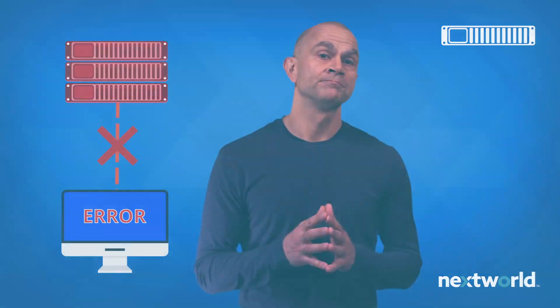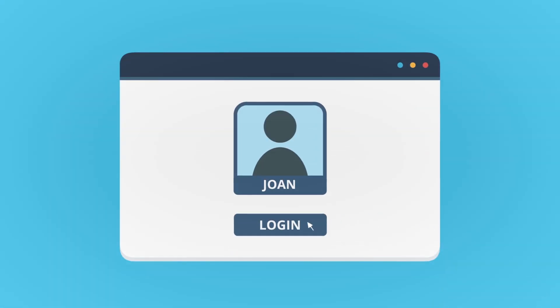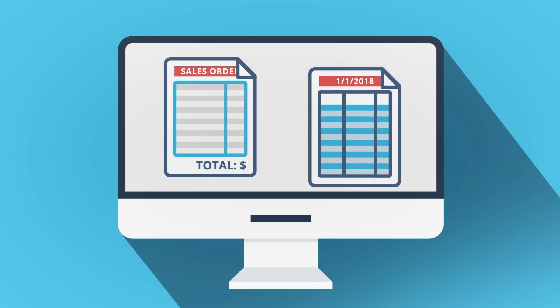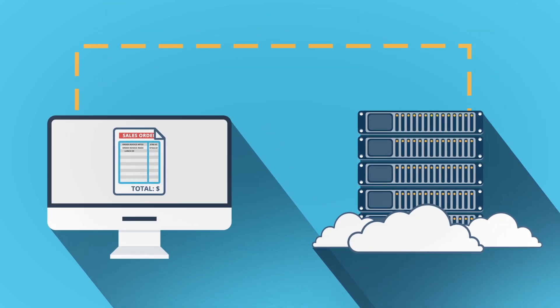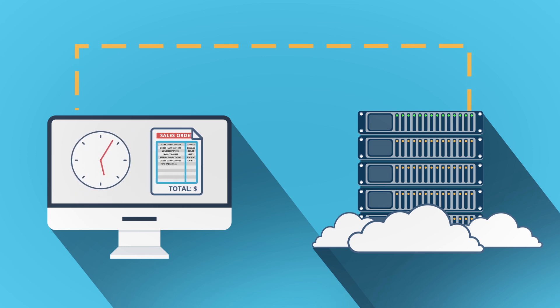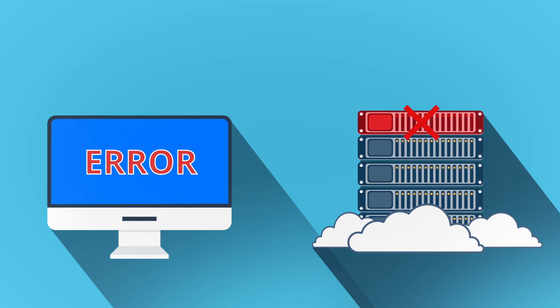Let's talk about resiliency and fault tolerance. If a server goes down — it could be due to a hardware fault or any number of reasons — with a traditional architecture, any users assigned to that server will experience issues and loss of work. For example, let's say Joan is logged in and entering a large transaction, such as a sales order or a journal entry. All her state and information on that transaction as she works is stored on a single server. Joan may have worked on that transaction for a significant amount of time. If that server experiences issues, she will lose all her work.